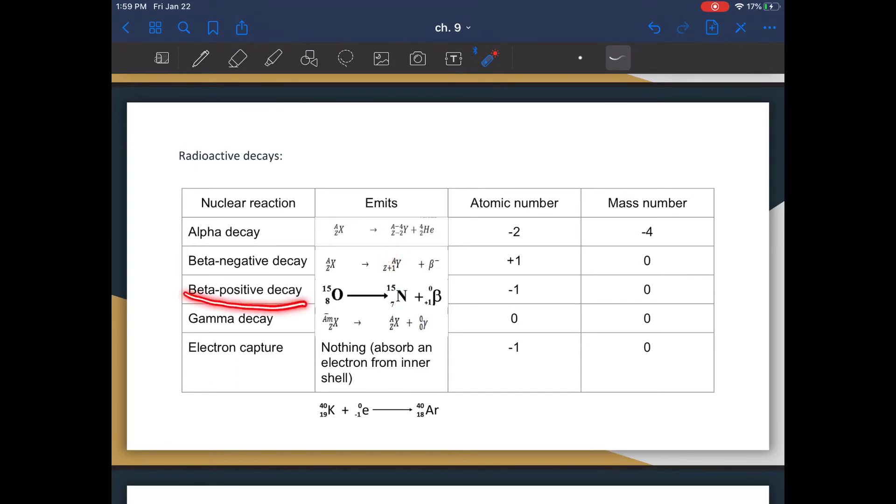Beta positive decay is kind of similar to this, where you have your original particle, and you emit what's called a positron. And because you have emitted this positron, you basically turn a proton into a neutron, because a proton has a positive charge, and a neutron has a neutral charge. So by emitting this positive charge, you have decreased the atomic number by one. And the mass number, of course, stays the same.